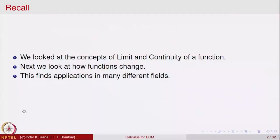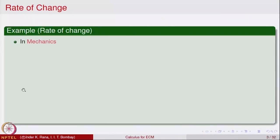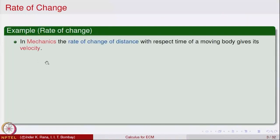This rate of change is applicable in many different fields. For example, in mechanics the rate of change of distance with respect to time of a moving body gives the notion of velocity. Many of you must have driven a car and been asked about speed — the person looks at the meter and says the speed is 61 kilometers per hour, meaning at that moment the vehicle is traveling at 61 kilometers per hour.